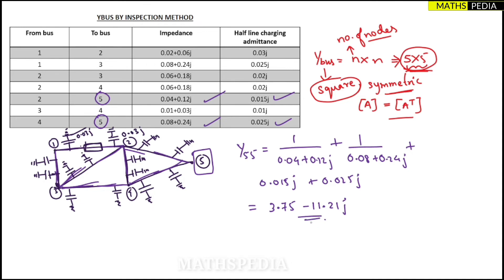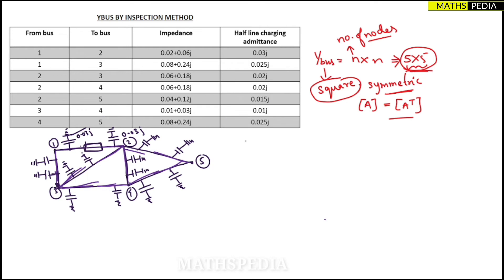Now let us find the off-diagonal elements. Since Y-bus is symmetric, Y12 = Y21. For off-diagonal elements, you take the negative of the admittance between those two nodes. Important: for off-diagonal elements, do not consider the half line charging admittance — ignore that column entirely.